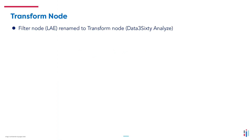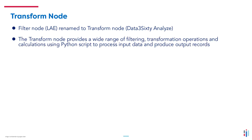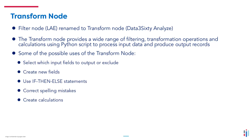The filter node in LAE has now been renamed to the transform node in Data360 Analyze. The transform node provides a wide range of filtering, transformation operations, and calculations using Python script to process input data and produce output records. Some of the possible uses of the transform node are: select which input fields to output or exclude, create new fields, use the if-then-else statement, correct spelling mistakes, and create calculations.